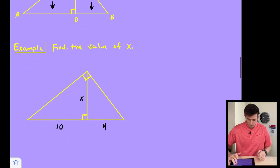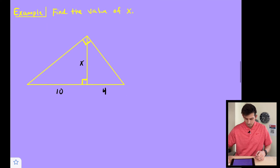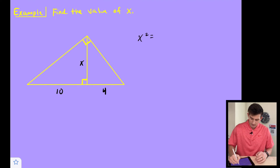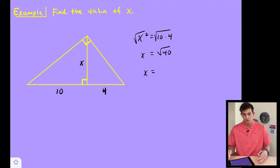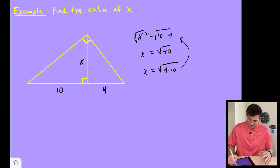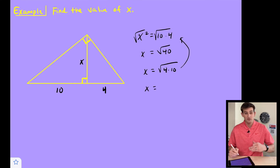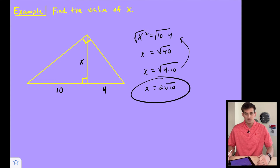Let's apply the geometric mean altitude theorem to find the value of X, which is our altitude. We say X squared equals 10 times 4. Taking the square root of both sides gives X equals the square root of 40. Since 40 equals 4 times 10, and the square root of 4 is 2, we get X equals 2 root 10.